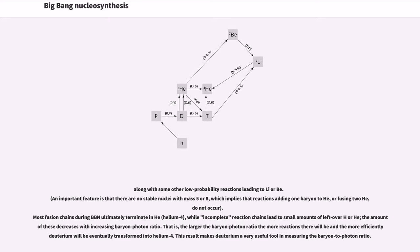That is, the larger the baryon-photon ratio, the more reactions there will be and the more efficiently deuterium will be eventually transformed into helium-4. This result makes deuterium a very useful tool in measuring the baryon-to-photon ratio.